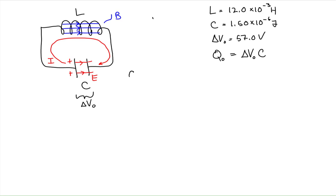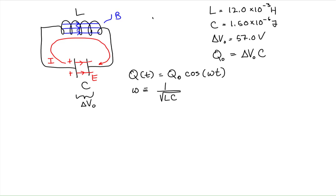Current and charge both vary periodically as a function of time. The charge function equals the amplitude Q₀ times the cosine of the product of angular frequency and time. Angular frequency ω is defined as 1 over the square root of the product of the inductance and capacitance. Since ω equals 2π times frequency, the frequency of oscillations is equal to 1 over 2π times the square root of the product of inductance and capacitance.